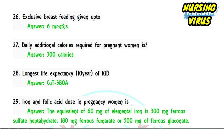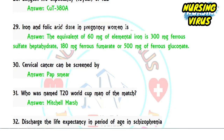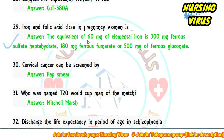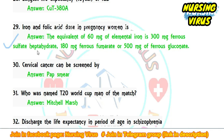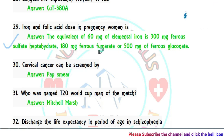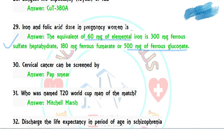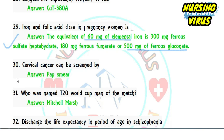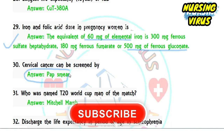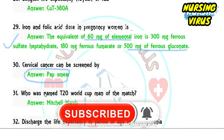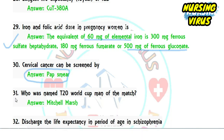Question 29: the iron and folic acid dose in pregnant women — according to WHO, 60 mg of elemental iron is equivalent to 300 mg ferrous sulfate, 180 mg ferrous fumarate, or 500 mg ferrous gluconate. Question 30: cervical cancer is most commonly screened through the Pap smear, which is a very frequently repeated question across various nursing exams.